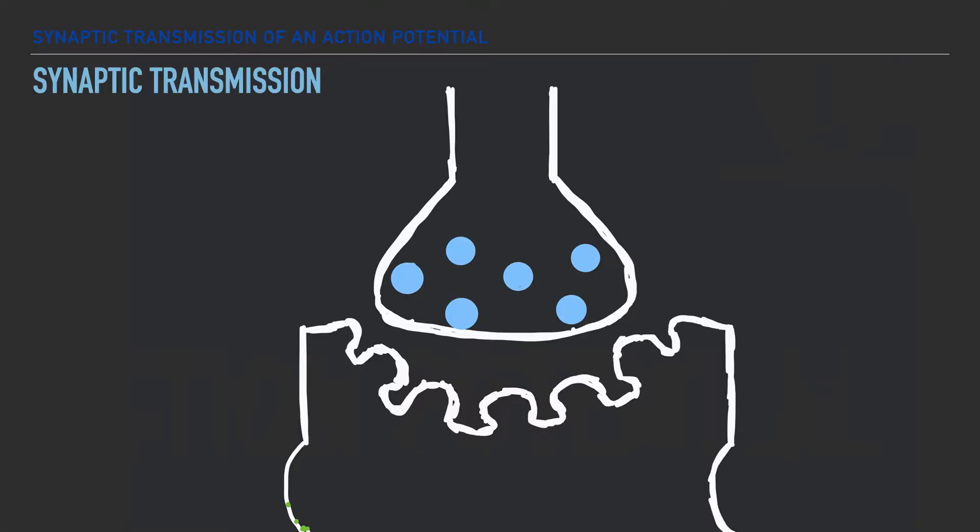As the action potential travels down the axon through either continuous conduction or saltatory conduction, it will ultimately meet the end of the axon, and we call this the synaptic terminal.